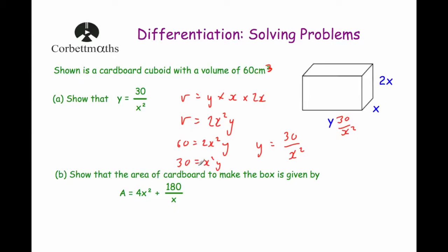Part B says show that the area of the cardboard to make the box is given by A equals 4X squared plus 180 over X. First I'll check: this cuboid has a lid, so we work out all six faces. We'll find the area of the three visible rectangles — front, side, and top — then double it. Face one (the front) has area equal to length times height: 30 over X squared times 2X, which gives 60 over X.